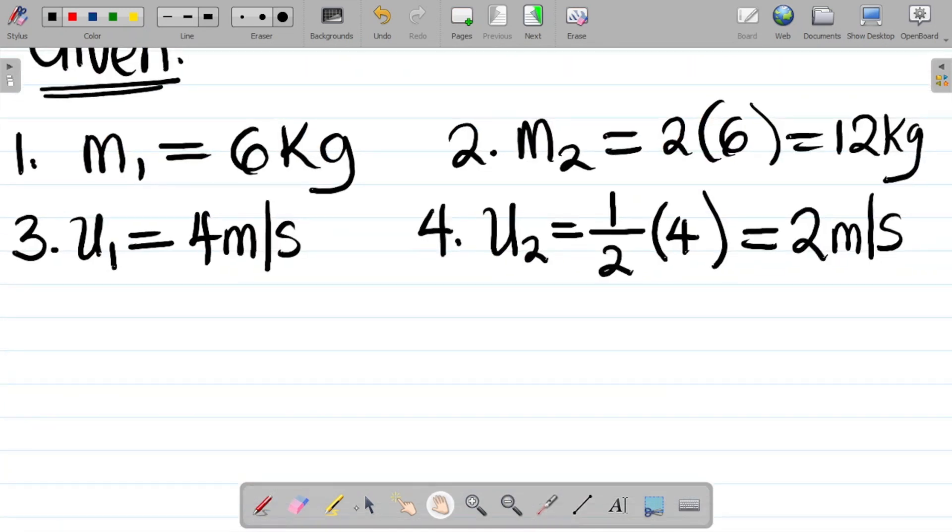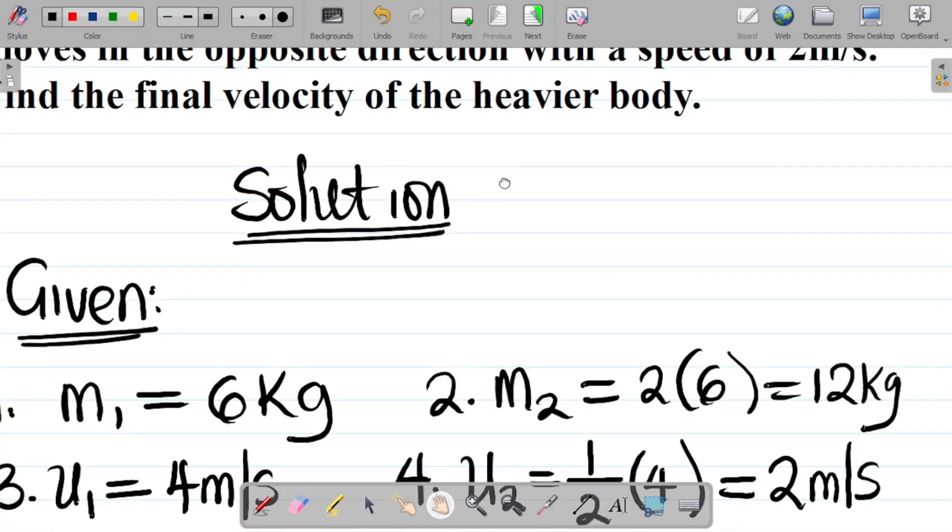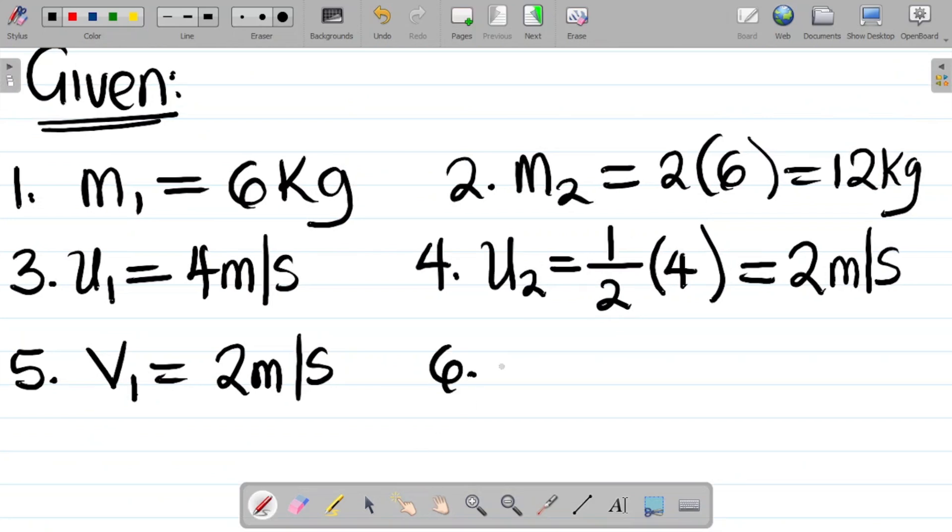So m1 moves in the opposite direction with a speed of 2 m per second. It means that the final velocity, number five, the final velocity v of mass m1 equals 2 m per second. And then finally, they said find the final velocity of the heavier body. The heavier body is mass 2, so I'm looking for v of mass 2. That's the final velocity of the heavier body. It's unknown.